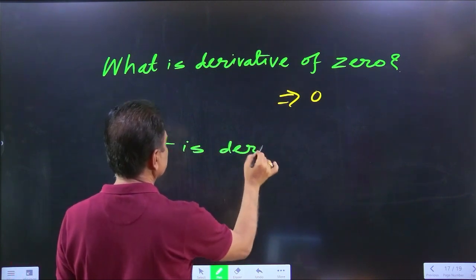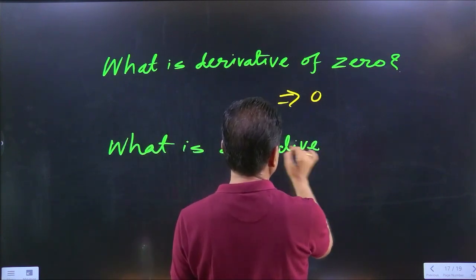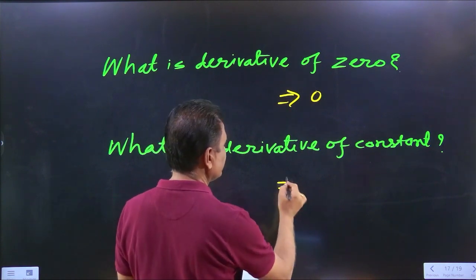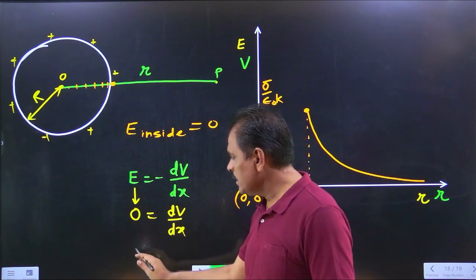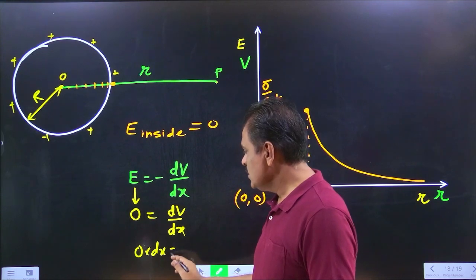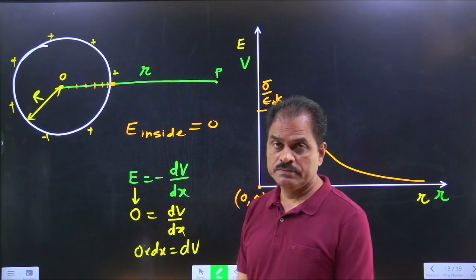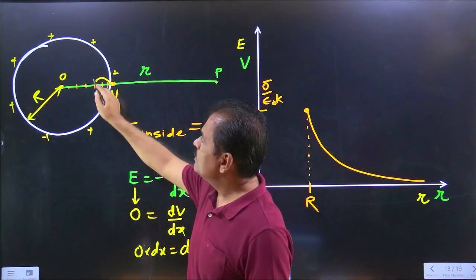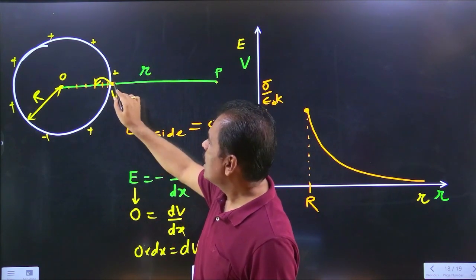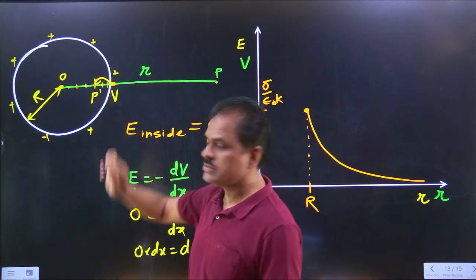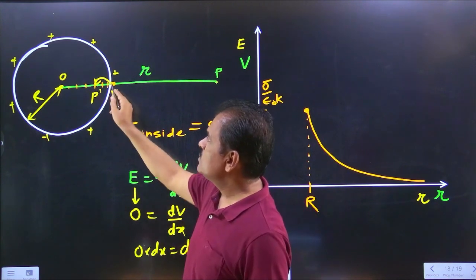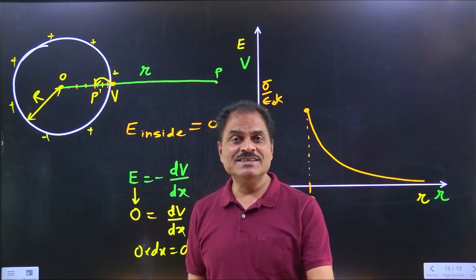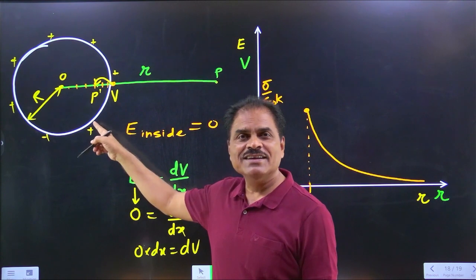What is the derivative of a constant term? E times dx equals dV, meaning the potential difference is zero. Potential difference is zero, meaning potential is the same — the potential on the surface is V. What is the potential at a point inside? Very good. Potential on the surface is V, then potential inside the conductor is also V.